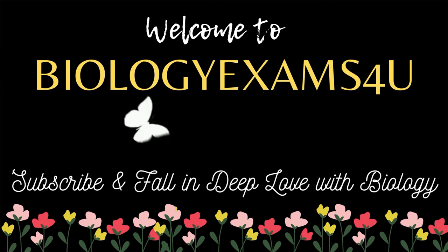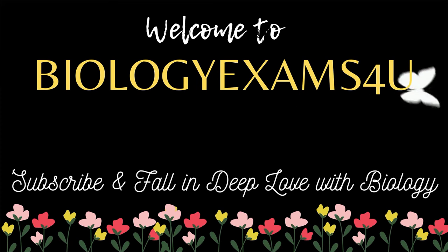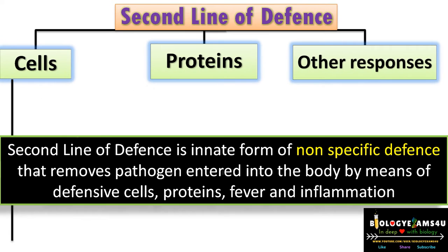Welcome to biology exams for a.com. In the last video we discussed the first line of defense. In this video we are going to discuss the second line of defense within 10 minutes. The second line of defense is the innate form of non-specific defense mechanism that removes pathogens entered into the body by means of defensive cells, proteins, and other responses like fever and inflammation, when the pathogen has crossed the first line of defense.